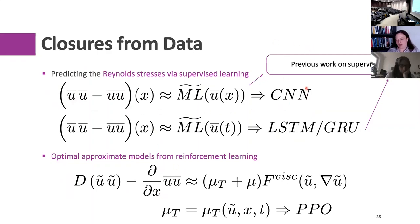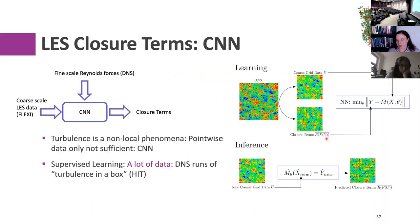We tried to find these Reynolds stresses using either spatial data with convolutional neural networks, or sequential data with LSTMs or GRUs. We took homogeneous isotropic turbulence (turbulence in a box), computed a bunch of DNS, extracted coarse-grid velocity fields, computed the true Reynolds stresses as closure terms, fit this with a neural network, and applied it to unseen data. A very straightforward approach.